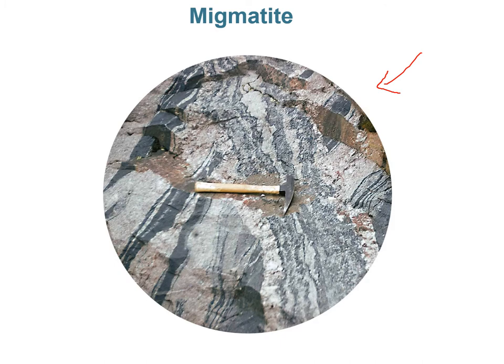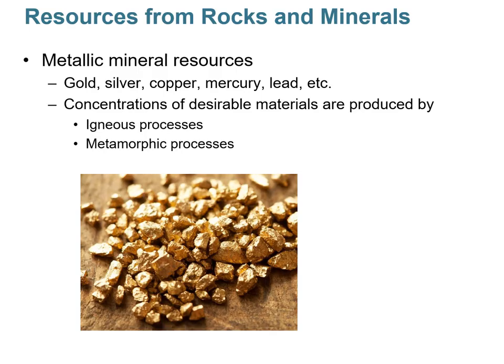Migmatite is a rock at the borderline between metamorphic and igneous: the transition from metamorphic rock to igneous rock. It occurs at very high temperatures where the rock actually partially melts. The melt portion is visible here in a lighter color, while the dark area is the portion that didn't melt. When it cools and solidifies, it's preserved as migmatite.